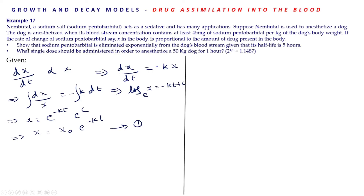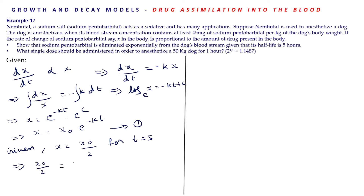It is given the half-life is 5 hours, meaning x = x₀/2 when t = 5. From equation 1: x₀/2 = x₀·e^(−5k), so 1/2 = e^(−5k), giving e^(5k) = 2 — equation 2. Up to finding the solution carries 2 marks and finding a relation for k carries 1 mark.